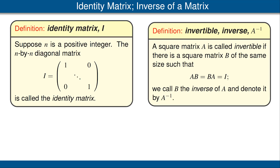A square matrix A is called invertible if there is a square matrix B of the same size, such that A times B and B times A are both equal to the identity matrix I. We call B the inverse of A, and denote it by A raised to the minus 1 power.